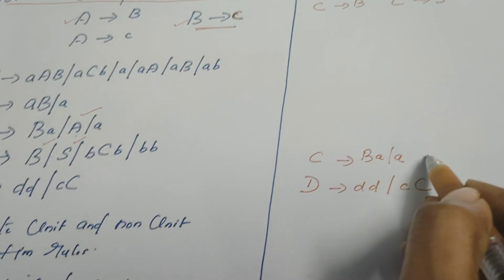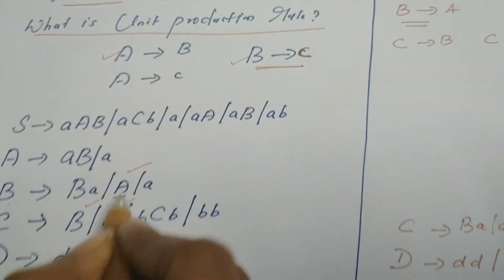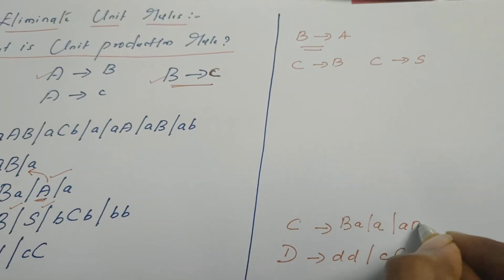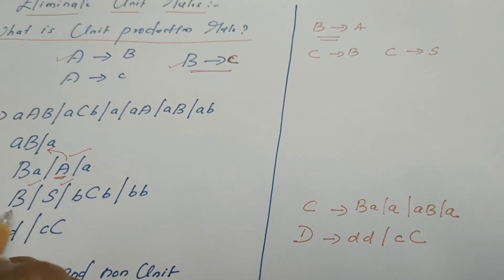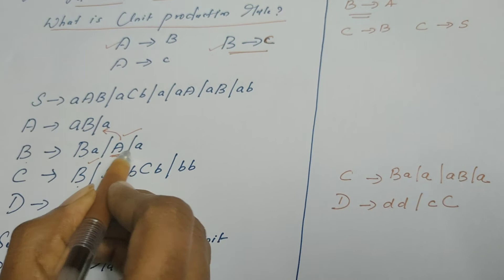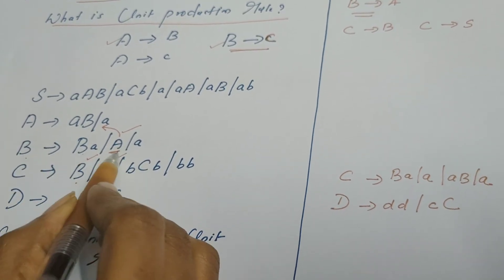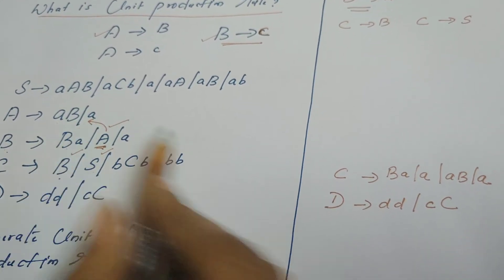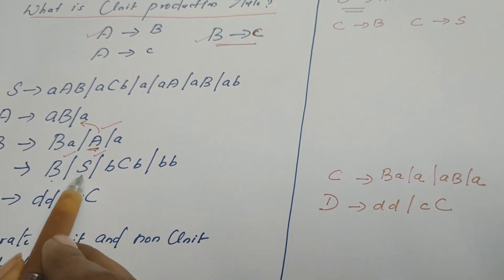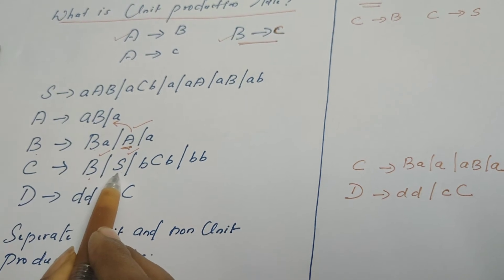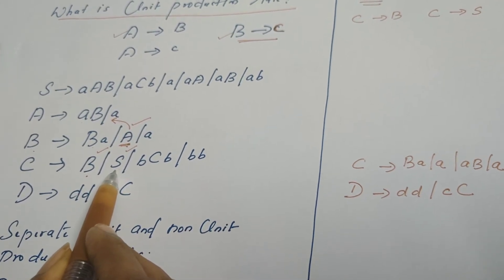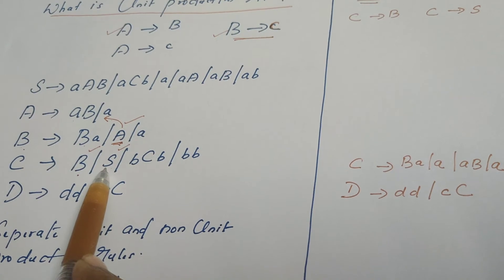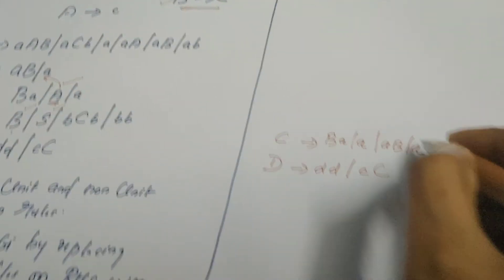But B can also be rewritten as A, which would introduce another unit production rule — so I should not do that. Instead of A, I replace it with its right-hand side definition. What is defined for A? A derives AB | A. So in place of B, I write its definition; then B in turn derives A (another unit production rule), so in place of A I substitute AB | A. Now continuing with C derives S — S is also a unit production rule and should be eliminated. Whatever is defined for S, I replace in place of S.